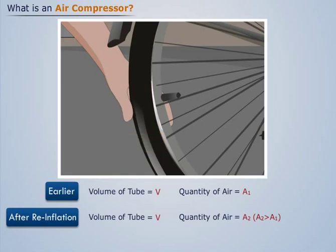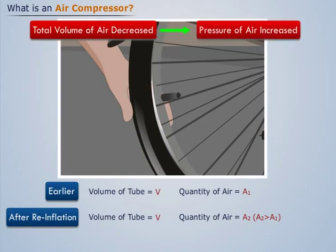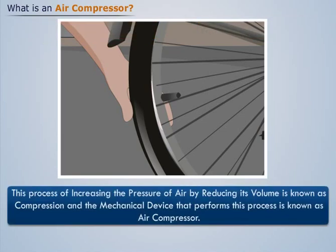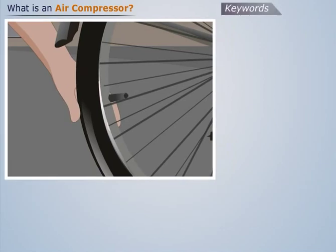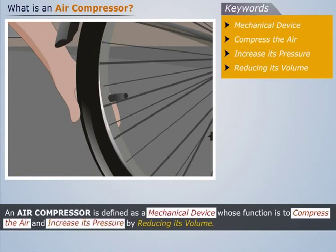This means that the amount of air per unit volume of the tire has increased or the total volume of the air has been decreased, which has resulted in increase in the pressure of the air. This process of increasing the pressure of air by reducing its volume is known as compression. And the mechanical device that performs this process is known as an air compressor. Thus an air compressor is defined as a mechanical device whose function is to compress the air and increase its pressure by reducing its volume.